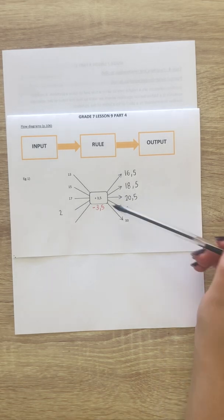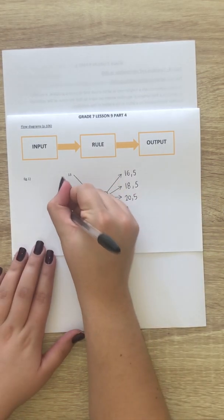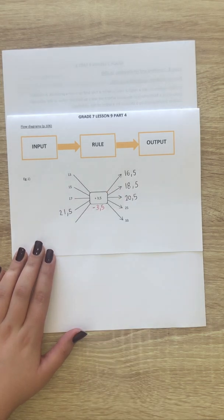Okay, so 25 minus 3 is equal to 22, minus a half is then 21 and a half.